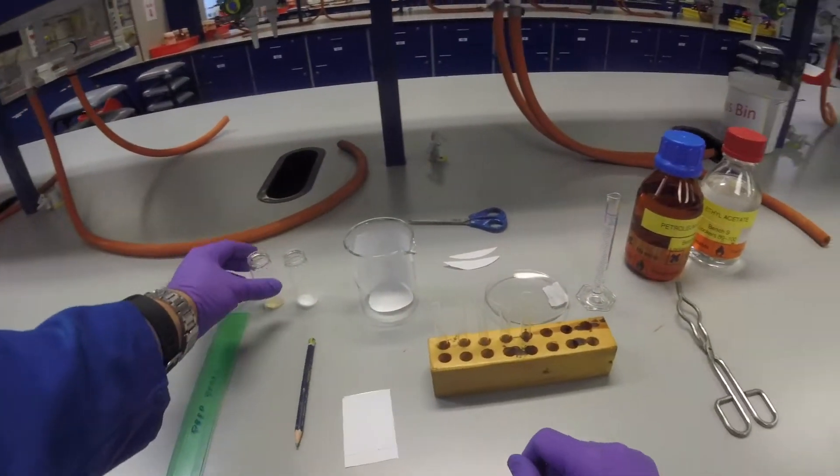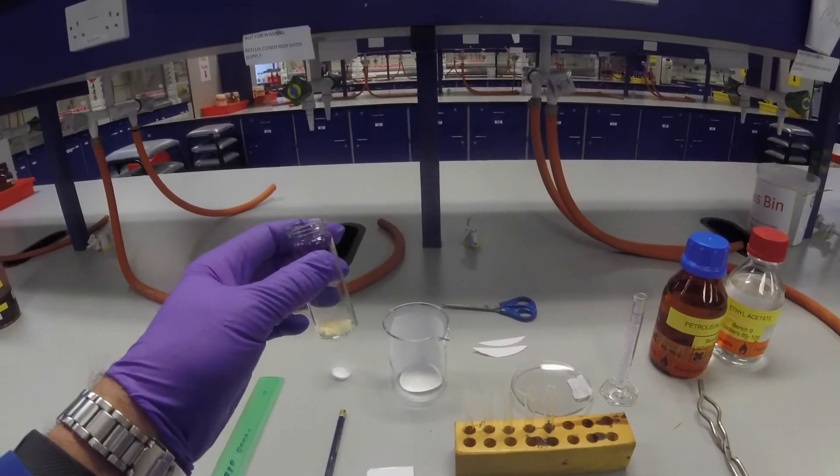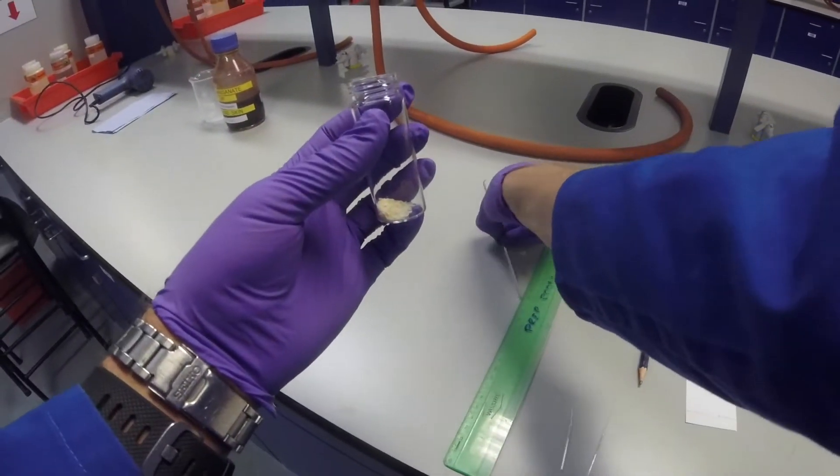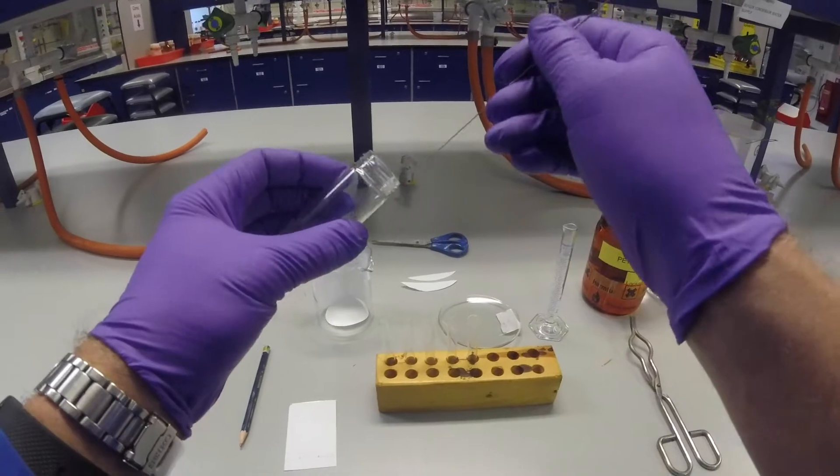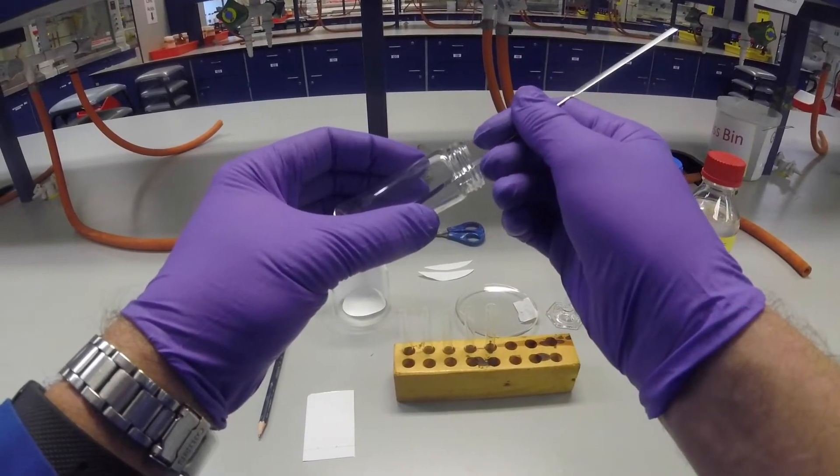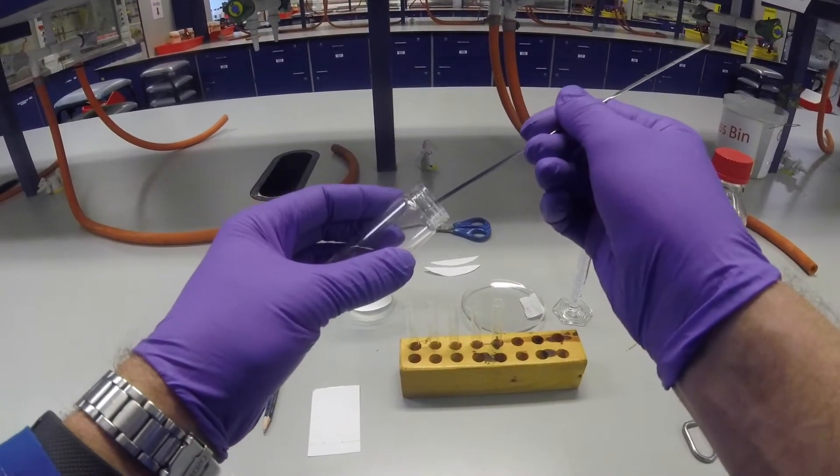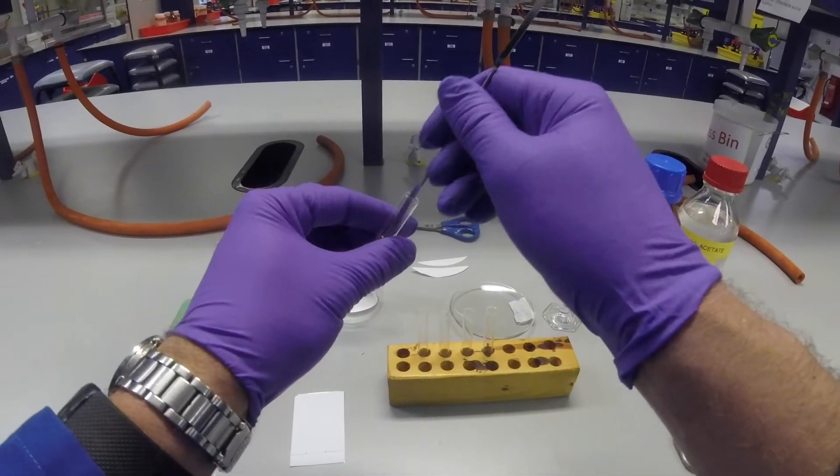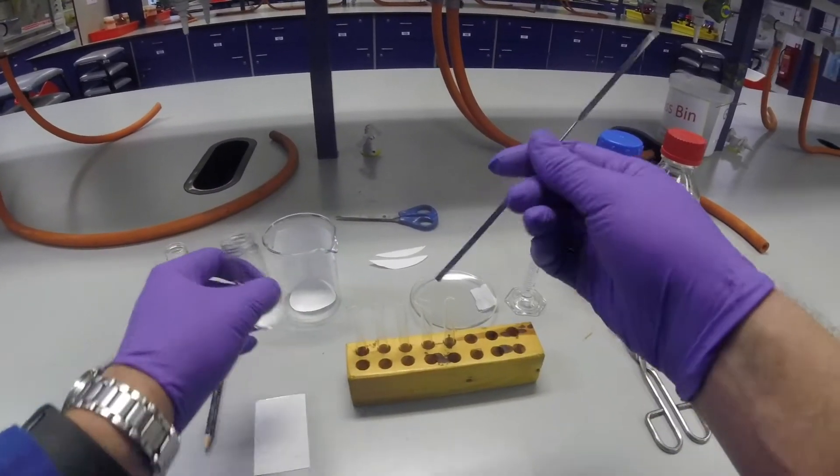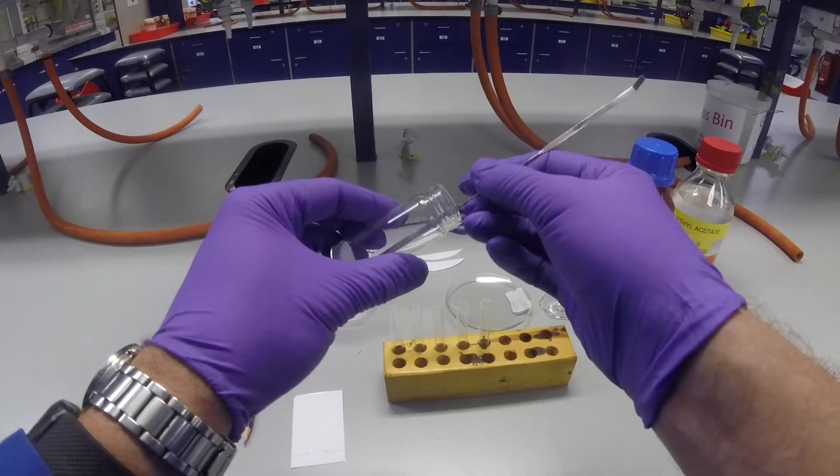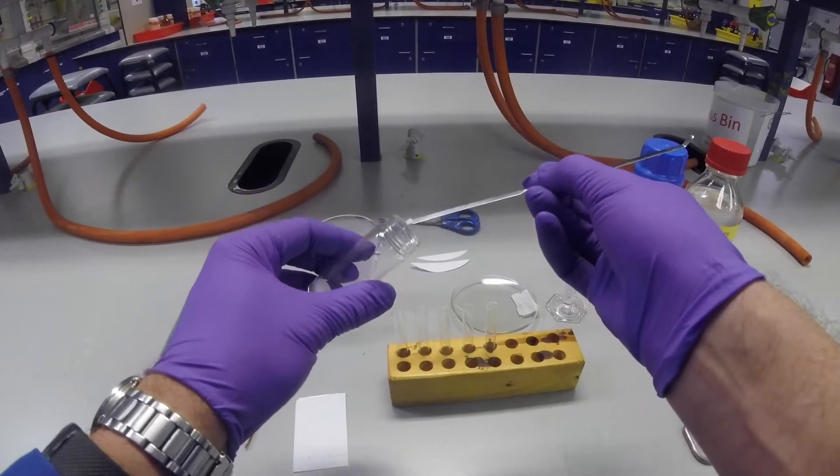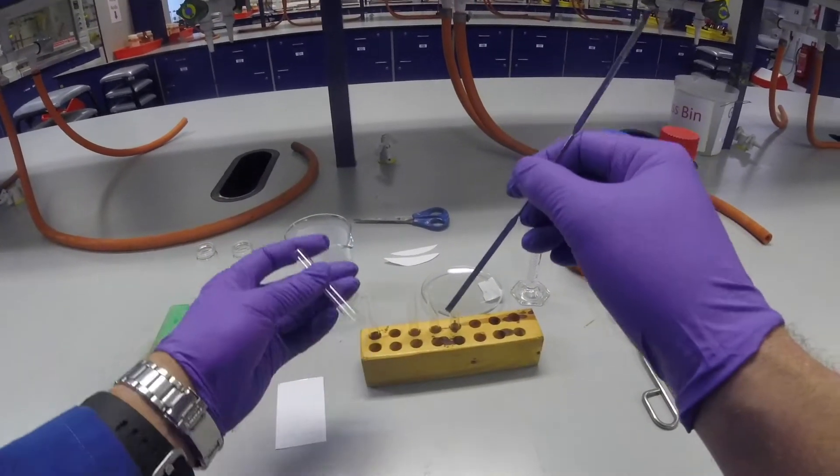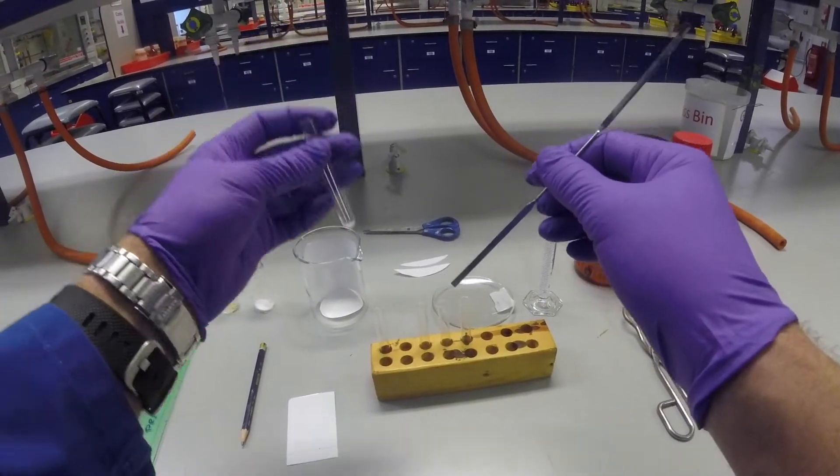We're going to take our compounds. TLC is a very sensitive technique, so you don't need very much of your compound. We're going to take a small amount of each compound, a few milligrams with a micro spatula, and pop them in small test tubes. This is the other compound we're going to look at, unknowns, and pop that into another vial there.